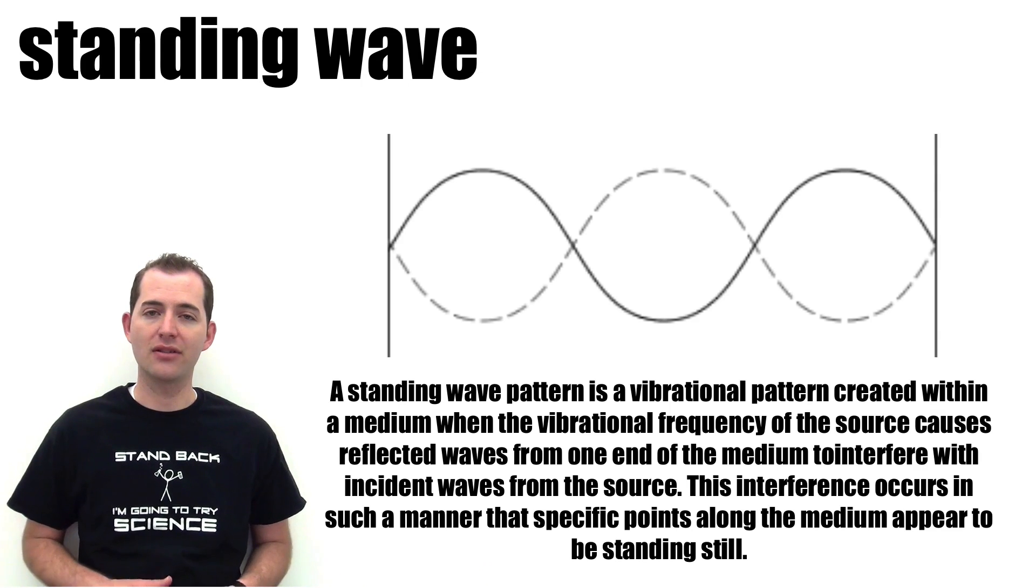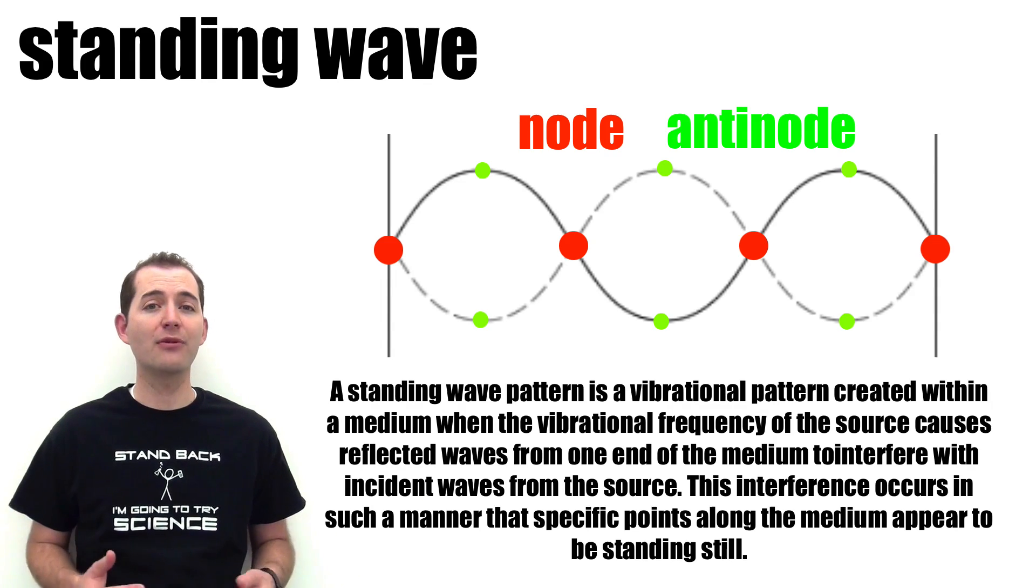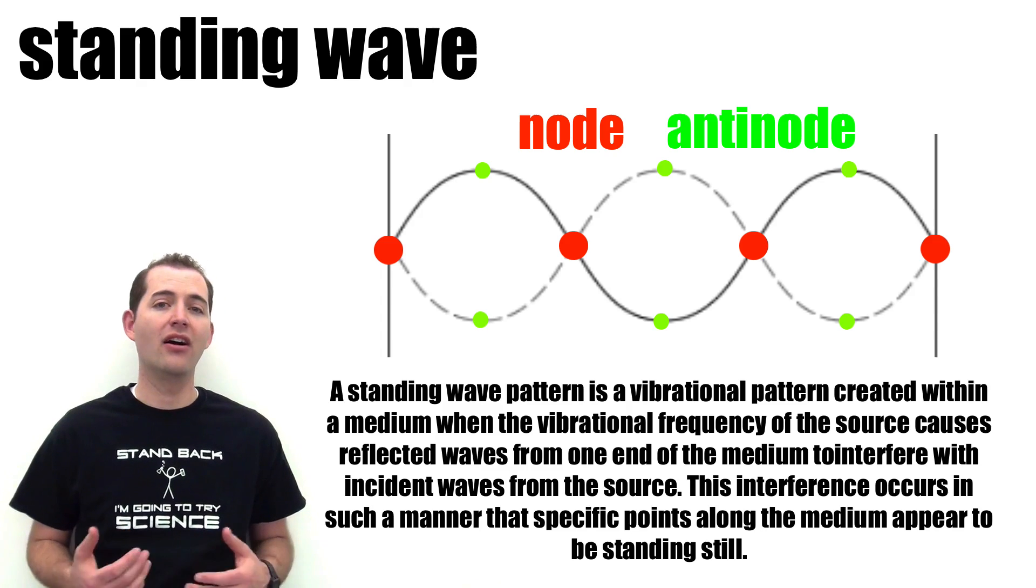They are node and antinode. A node is a point on a standing wave where there is no displacement from equilibrium, whereas an antinode is the point with the maximum displacement on that standing wave. Let's also look at a couple additional terms that apply to longitudinal waves, specifically sound waves.